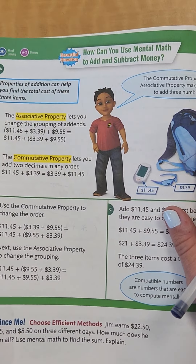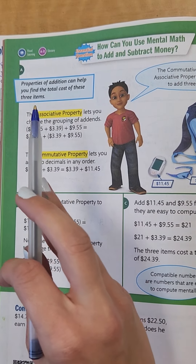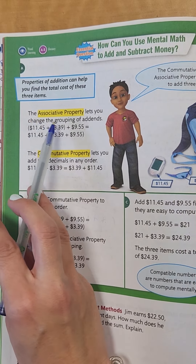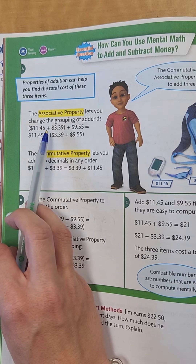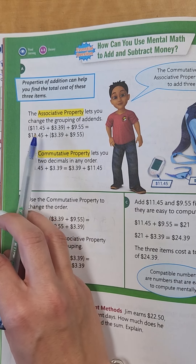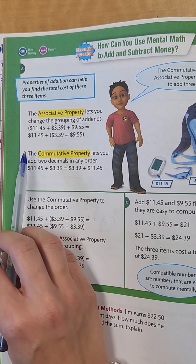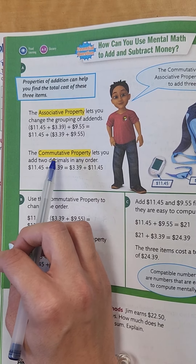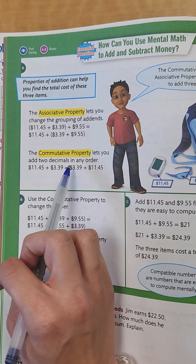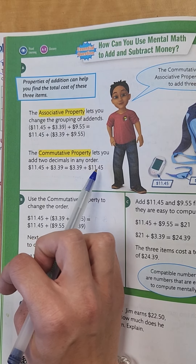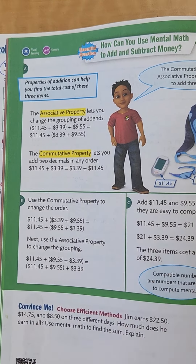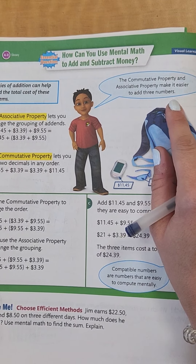On this page we see how you can use mental math to add and subtract. We look at the properties of addition to help find the total of three items. We have the associative property, which lets you change the groupings of addends — so instead of adding $11.45 plus $3.39, you can add $3.39 plus $9.55 first, then add $11.45. We also have the commutative property, which lets you add two decimals in any order: $11.45 plus $3.39 is the same as $3.39 plus $11.45.